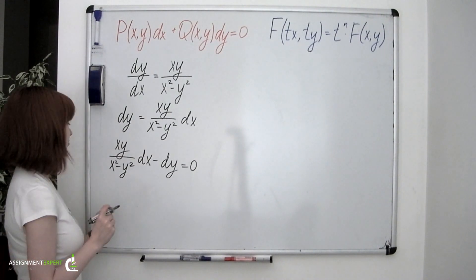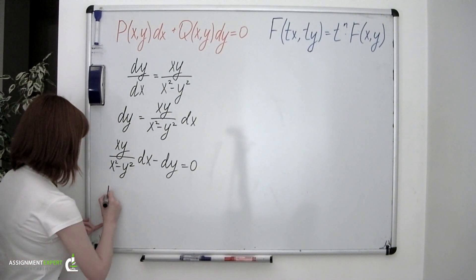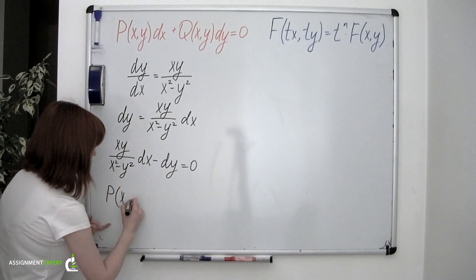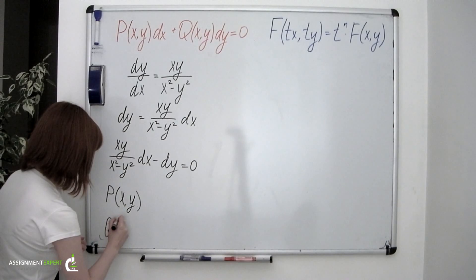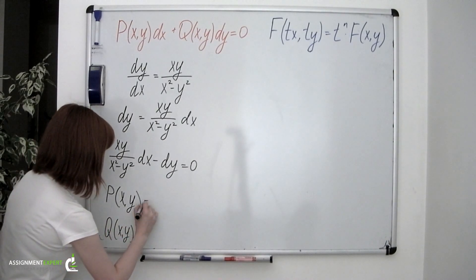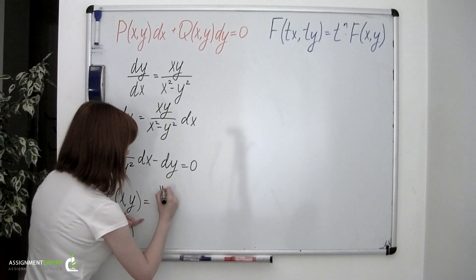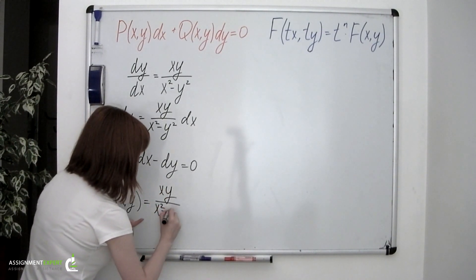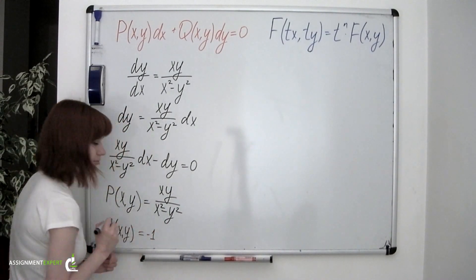Step 2: to check if this equation is homogeneous or not. To do this we need to consider the P and Q functions. In our case, the P function equals xy over x squared minus y squared, and Q equals negative 1.